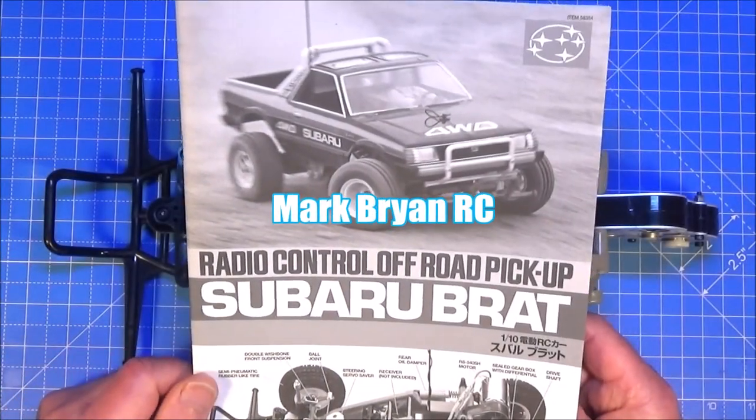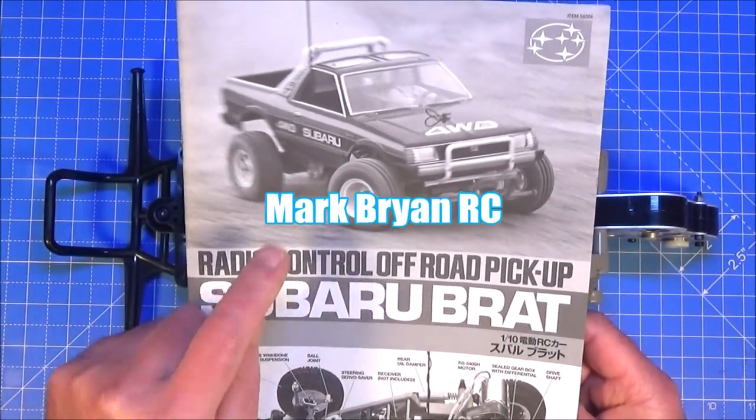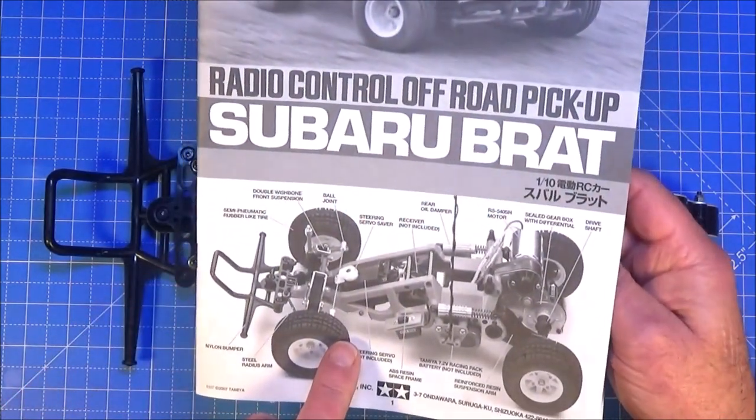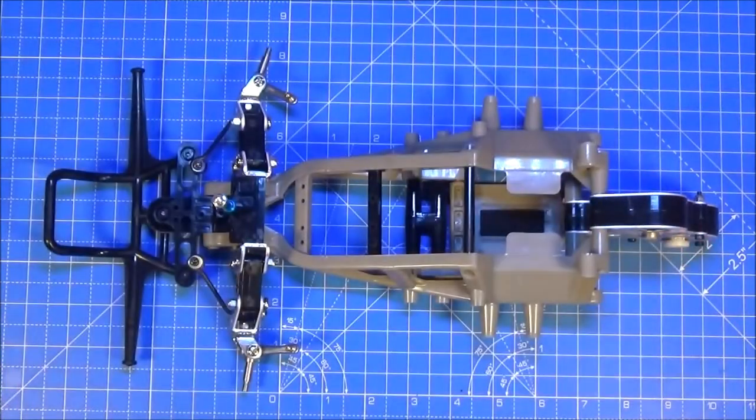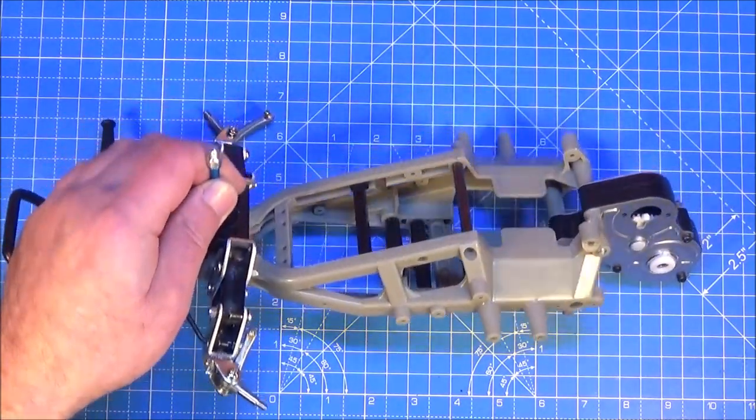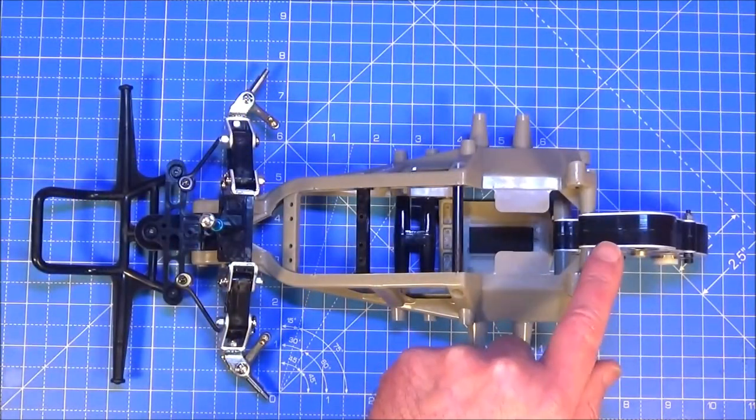Hi there, Mark here again and welcome to part 2 of my build guide for the Tamiya Subaru Brat on the ORV chassis. We got to step 10 last time, so we got this far - the front suspension's done, we got the gearbox done.